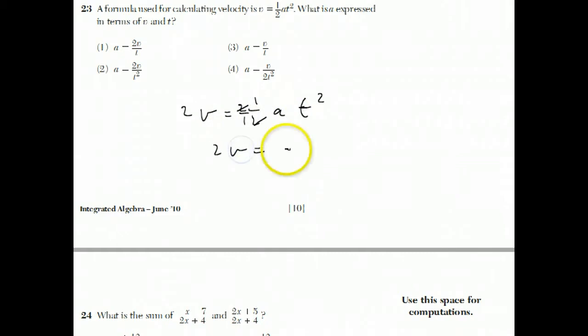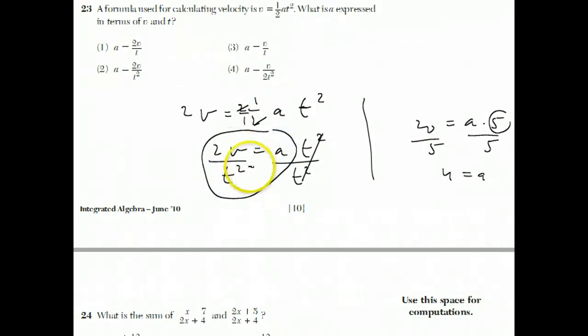Now, I have 2v equals a t squared. Now, imagine a question was like 20 equals a times 5. You would solve that one by dividing both sides by 5. Well, this is a times t squared. The t squared is kind of like the 5 over here. So, you divide both sides by t squared. And you get your answer: a equals 2v over t squared.